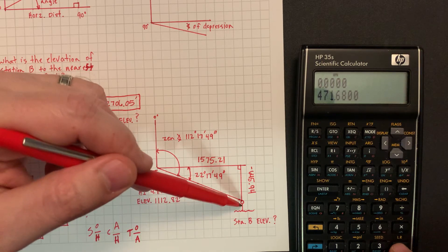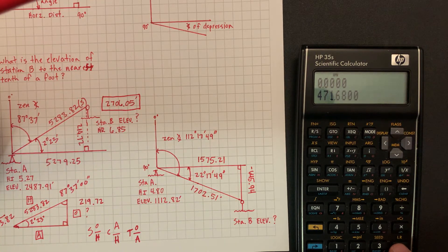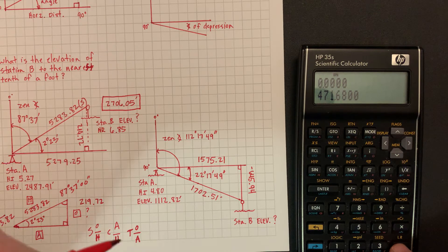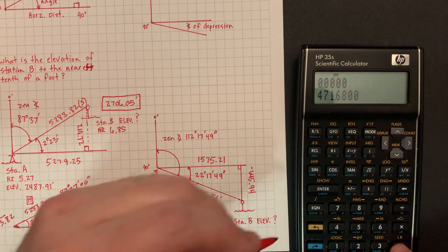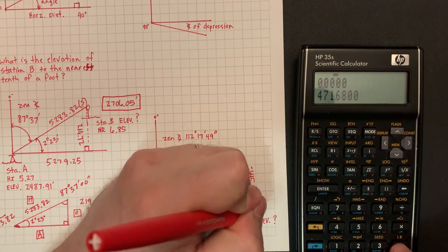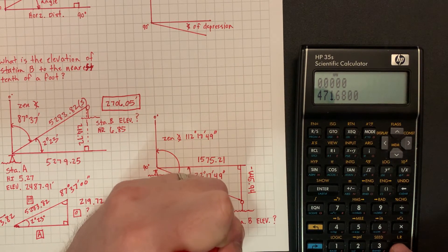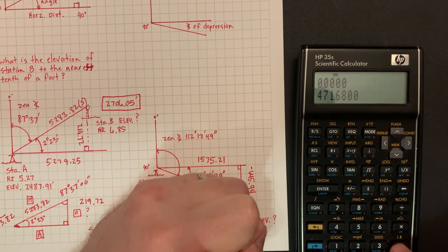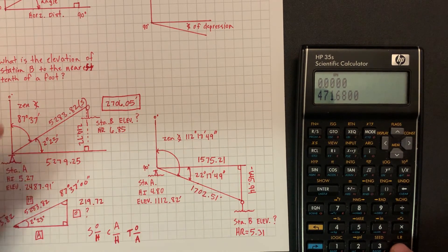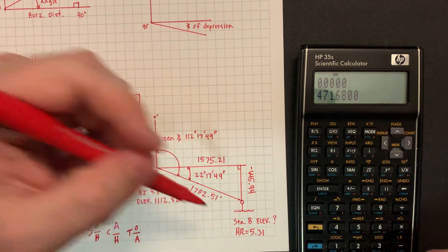Minus, and then we're going to subtract this. We'll just make it up. I didn't put in, so let's say HR equals 5.31, so we're going to subtract 5.31.